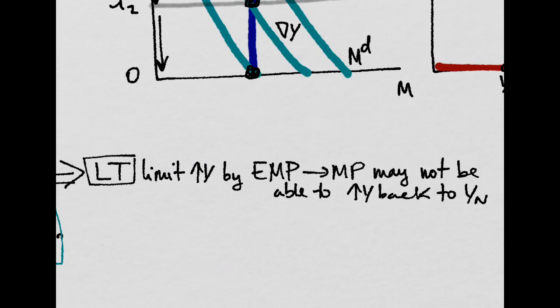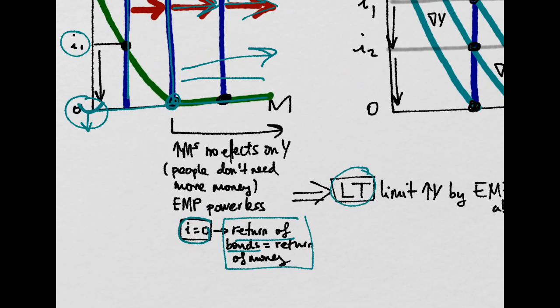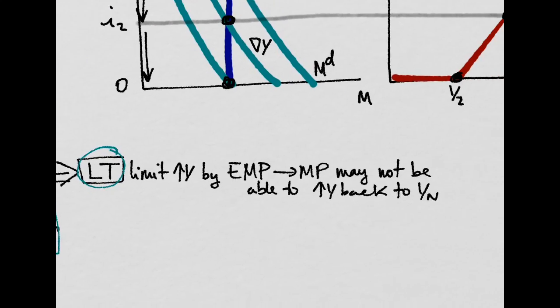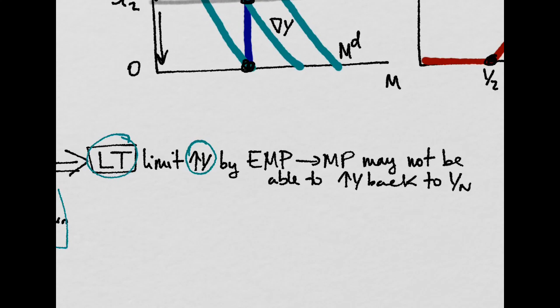So the liquidity trap, which is the presence of being at the zero lower bound and wanting to expand the monetary base, will have no effect on output. So monetary policy becomes unable to increase the output, in some cases back to the potential output level.